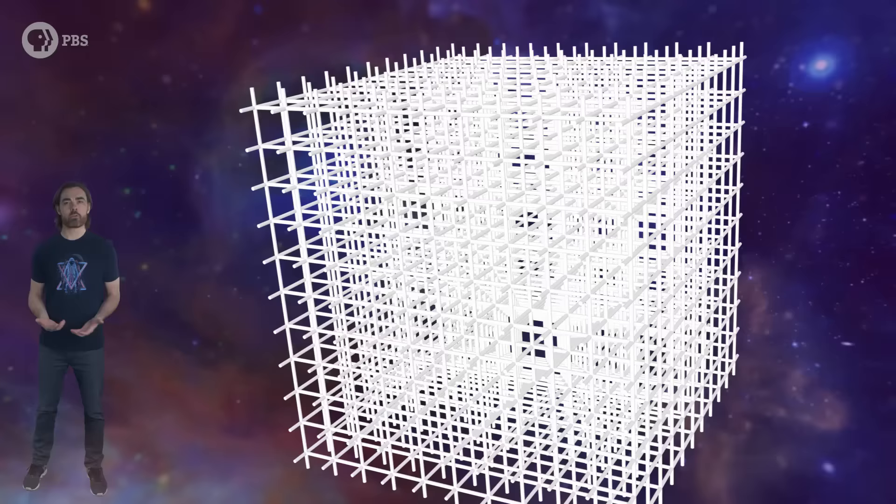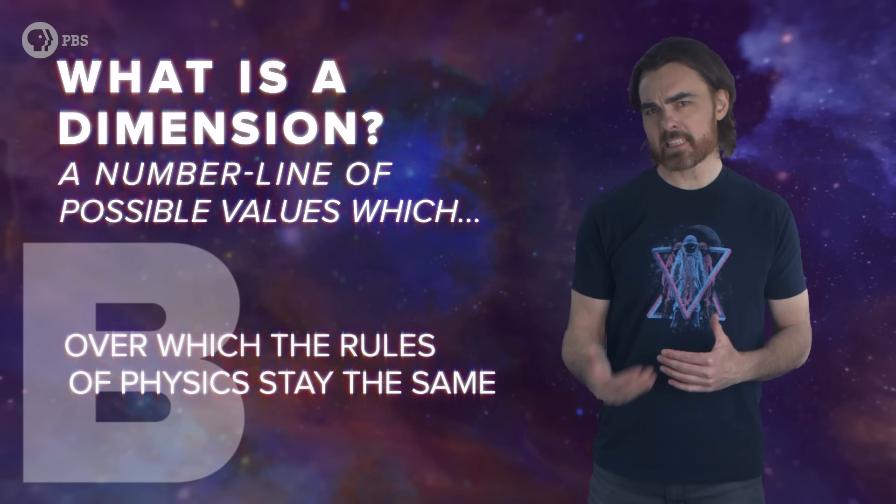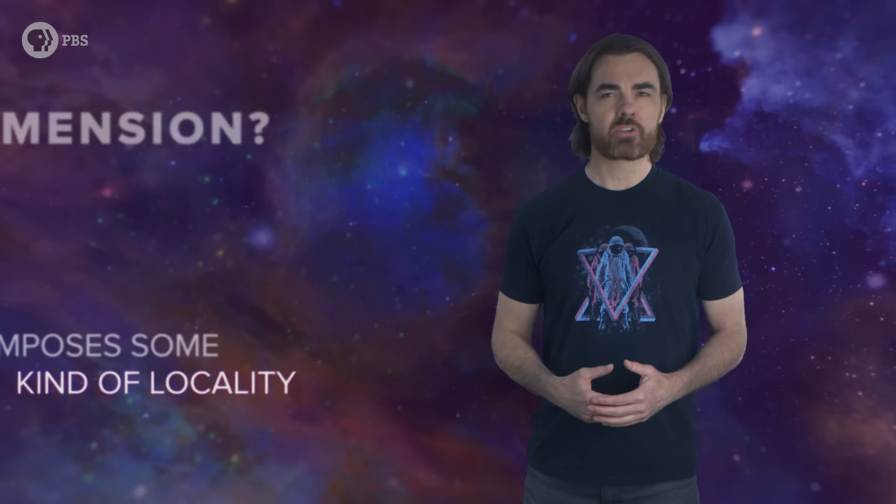You might say it's not a real 3D grid because the third dimension is fake. But is it? What is a dimension but a number line of possible values which exists alongside the other dimensions but is independent of them, over which the rules of physics stay the same, and imposes some kind of locality. For example, elements of that number line need to be next to each other to interact. Crudely, this is how an extra dimension can be coded in a holographic universe. But for the details, we need string theory.